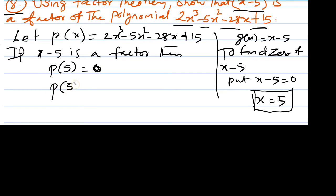P(5) equals 2 times 5 cubed minus 5 times 5 squared minus 28 times 5 plus 15.